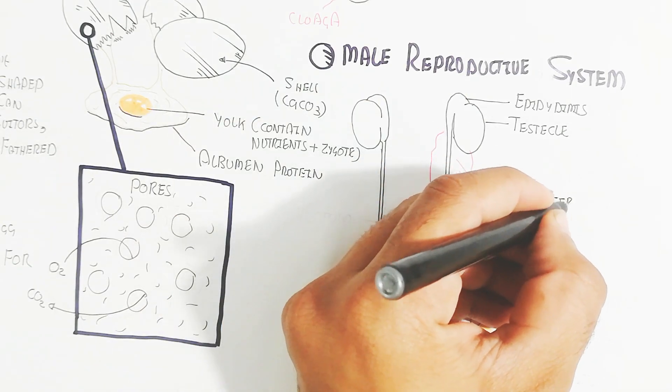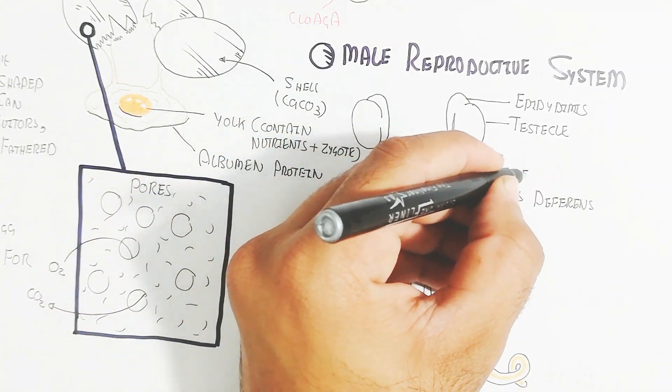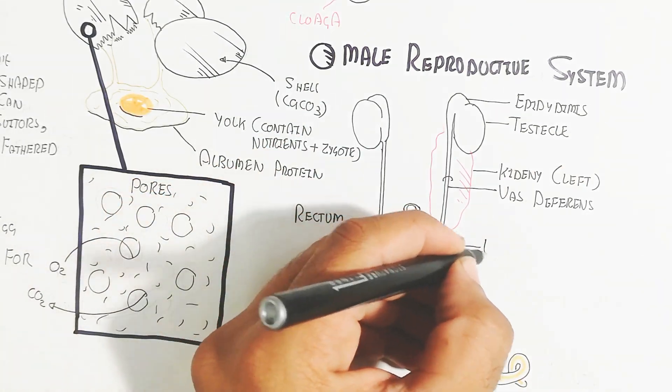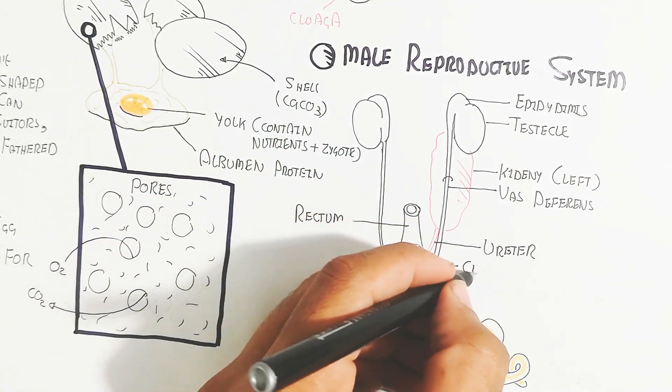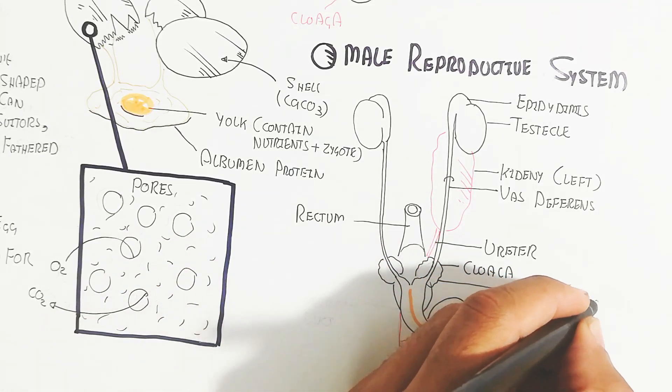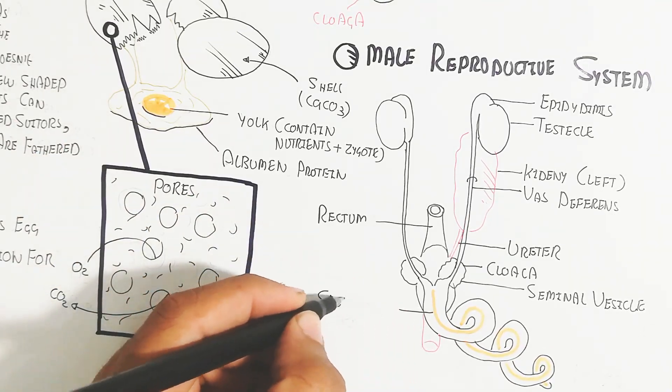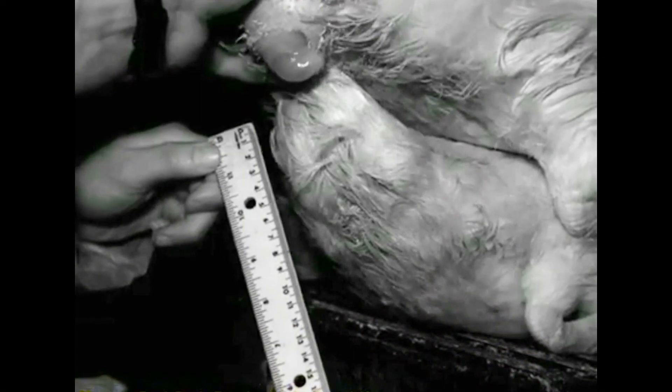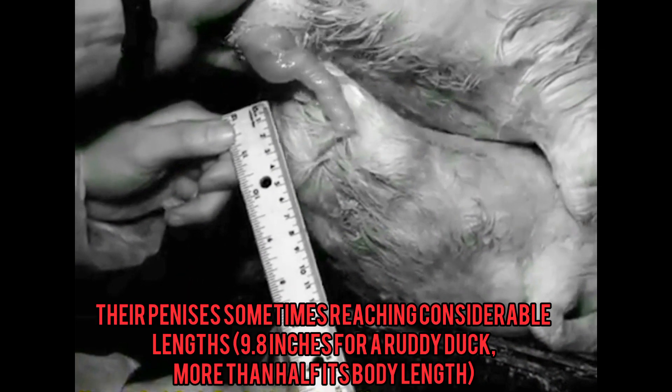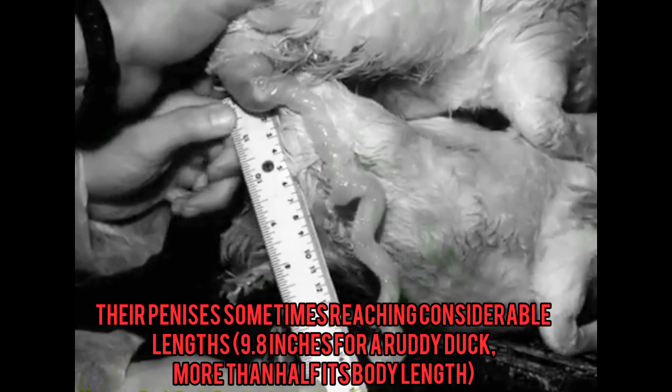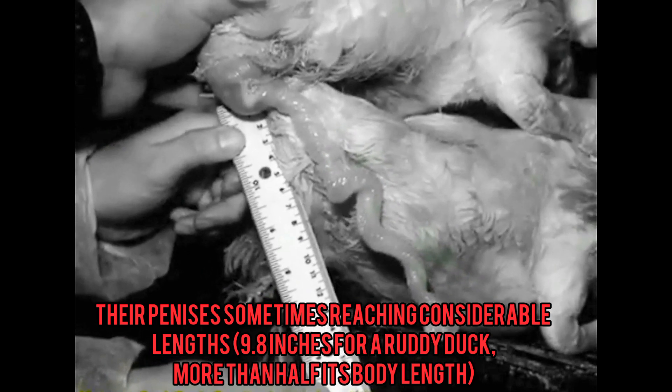Left and right kidneys are present. The vas deferens is present for sperm transformation into the female. This is the ureter, the cloaca, the seminal vesicle, and the spermatic duct. The penis is a long piece, sometimes reaching considerable length - 9.8 inches for an Argentine duck.